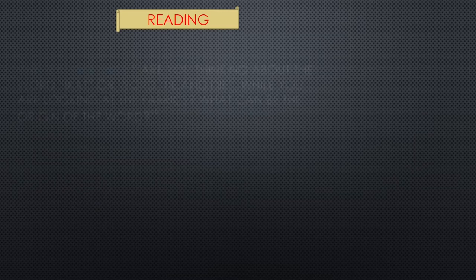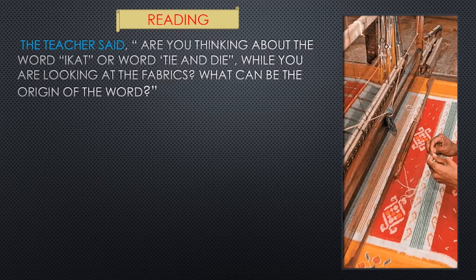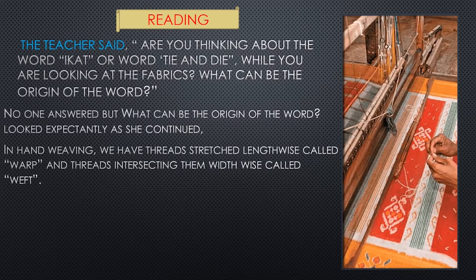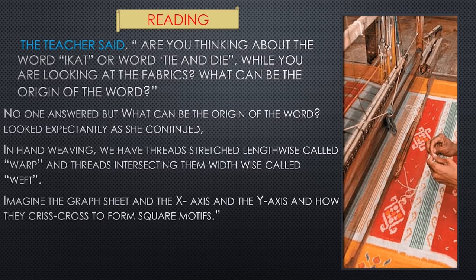Let us move to the reading section. The teacher said, 'Are you thinking about the word ikat or tie-and-dye while you are looking at the fabrics? What can be the origin of the word?' No one answered, but she looked expectantly as she continued. In hand weaving, we have threads stretched lengthwise called warp, and threads intersecting them widthwise called weft. Imagine the graph sheet and the x-axis and y-axis and how they criss-cross to form a square motif.